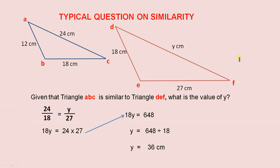Now here is a typical question on similarity to do with these two triangles. We're given that triangle ABC is similar to triangle DEF. That means they are both the same shape. It also means that the three angles are equal. Angle A equals angle D. Angle B equals angle E. And angle C equals angle F. That's what it means by them being similar. We have to find the value of Y. That's what we have to find.